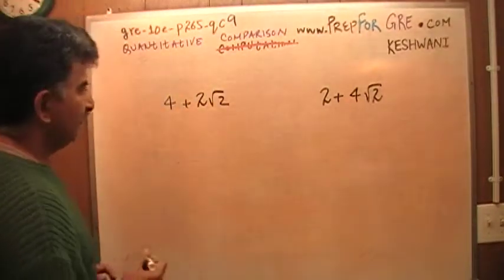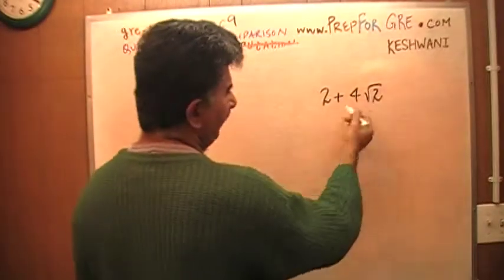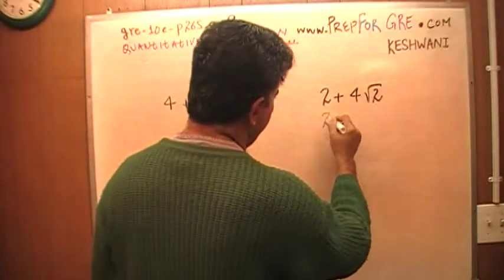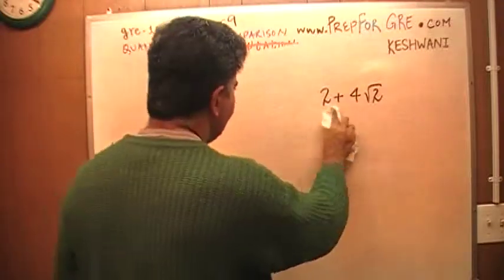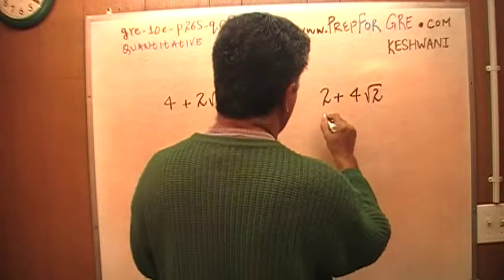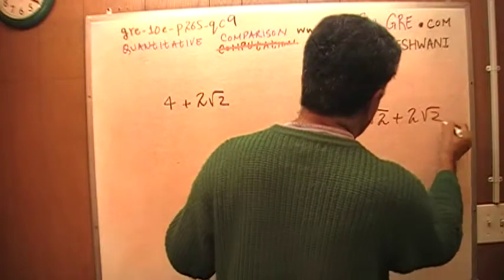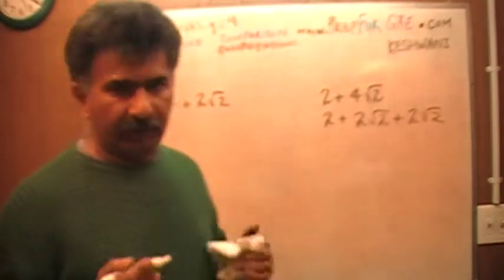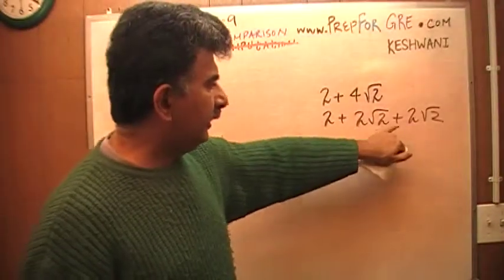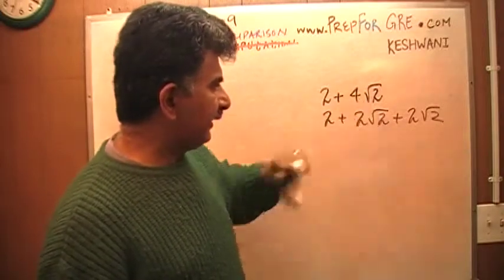Well, the very first thing I notice is that here I have 4 times root 2, which is same as, 4 times root 2 is same as, I'm going to actually, instead of erasing it, I'm going to rewrite this. So what we have here is 2 plus 2 root 2 plus 2 root 2. Why? Because 2 times root 2 plus 2 times root 2 is same as 4 times root 2. If you take 2 of this quantity and then 2 of this quantity, it's same as saying 4 of that quantity, 4 of root 2, which is what we start out with.